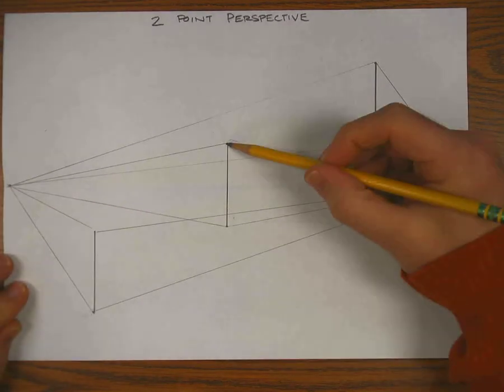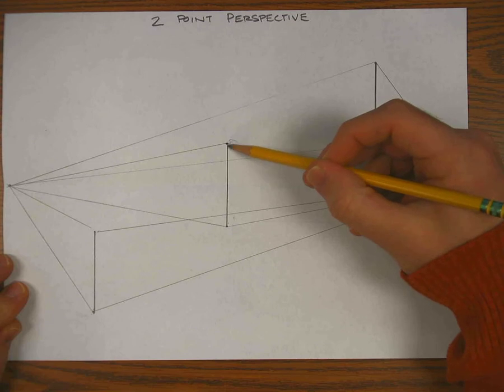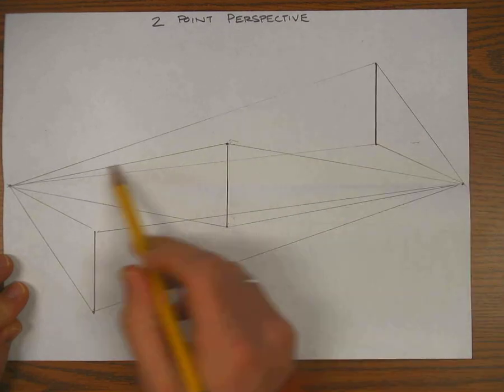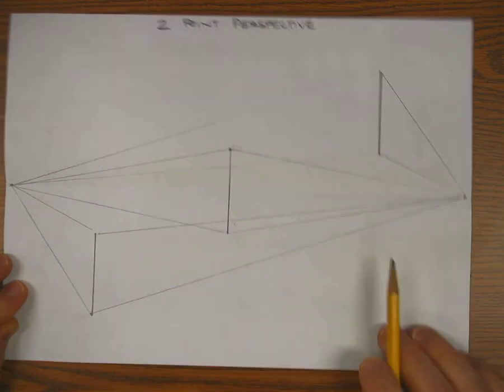Like I said, from each line on the top and the bottom, there's a line going to the left and to the right vanishing point.